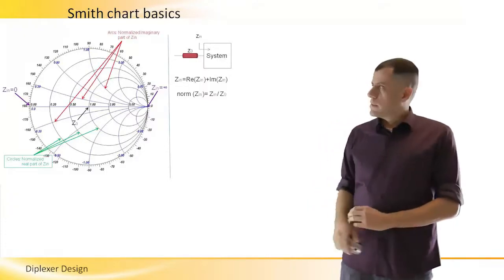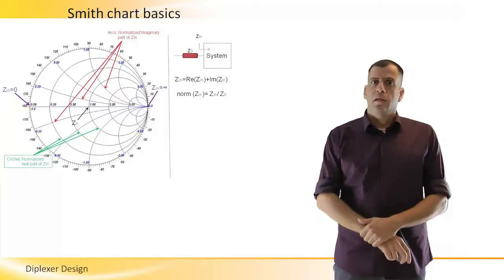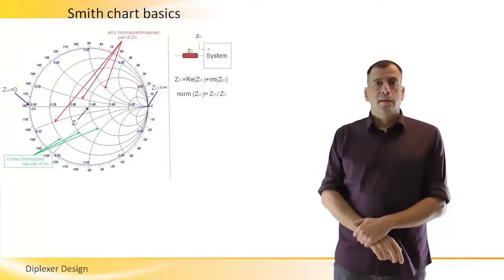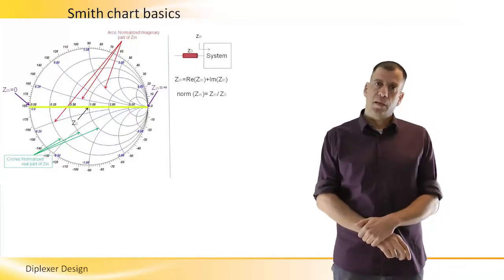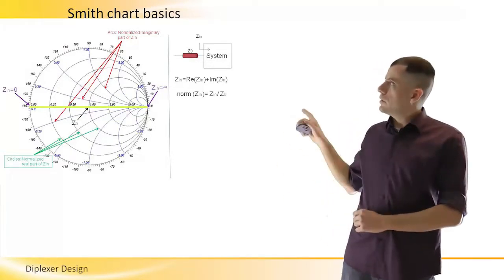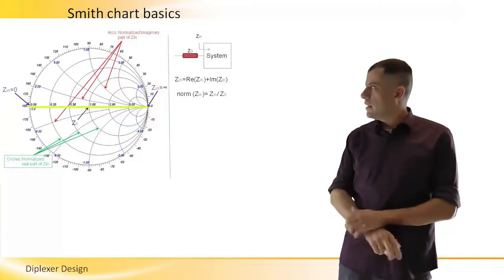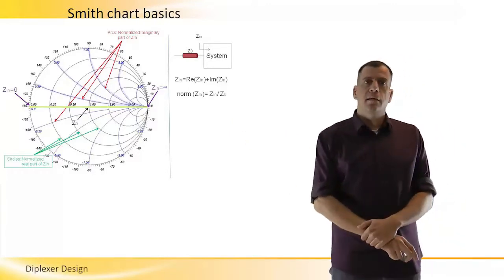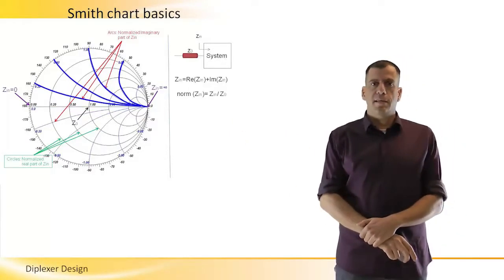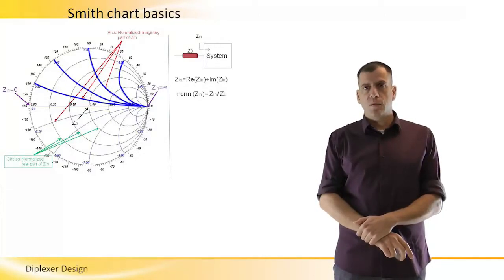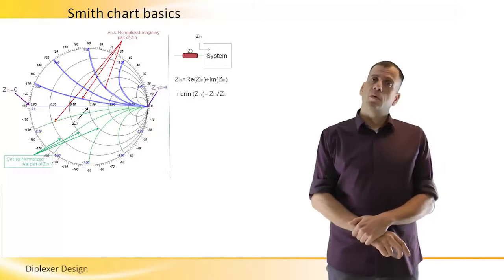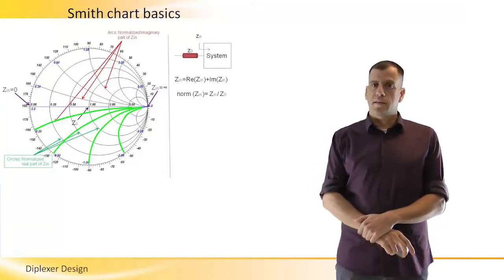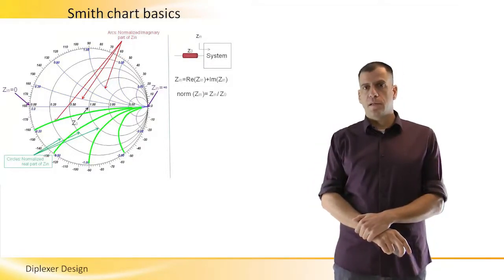The arcs on the Smith chart represent the reactance. The horizontal line represents zero reactance, meaning every point along it has zero reactance. The upper arcs represent positive reactance that we usually call inductive, and the lower arcs represent negative reactance which we usually call capacitive.